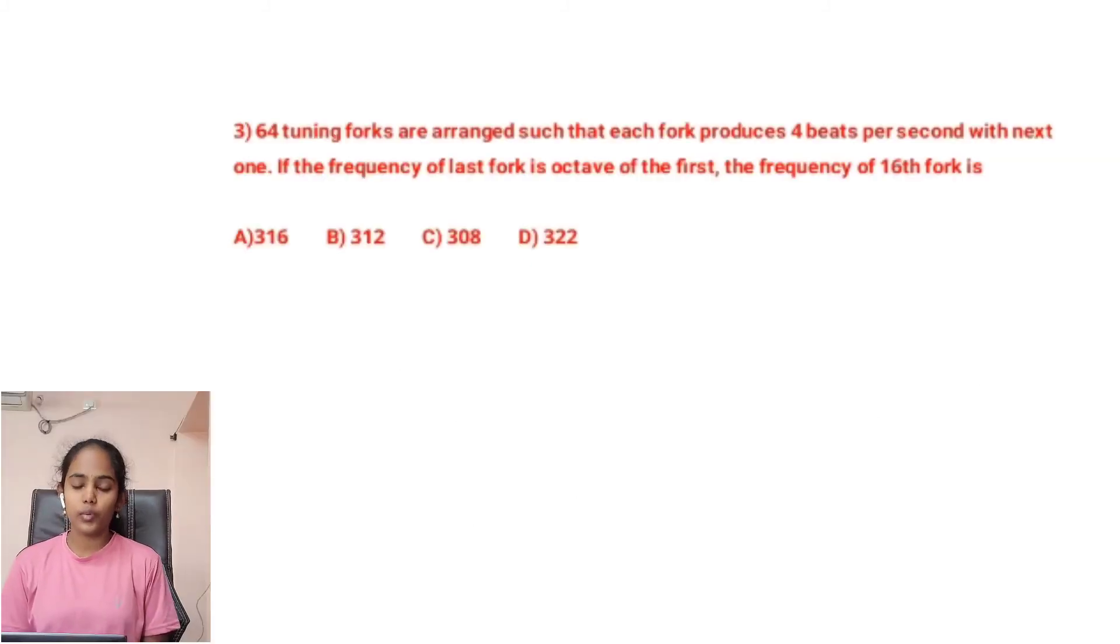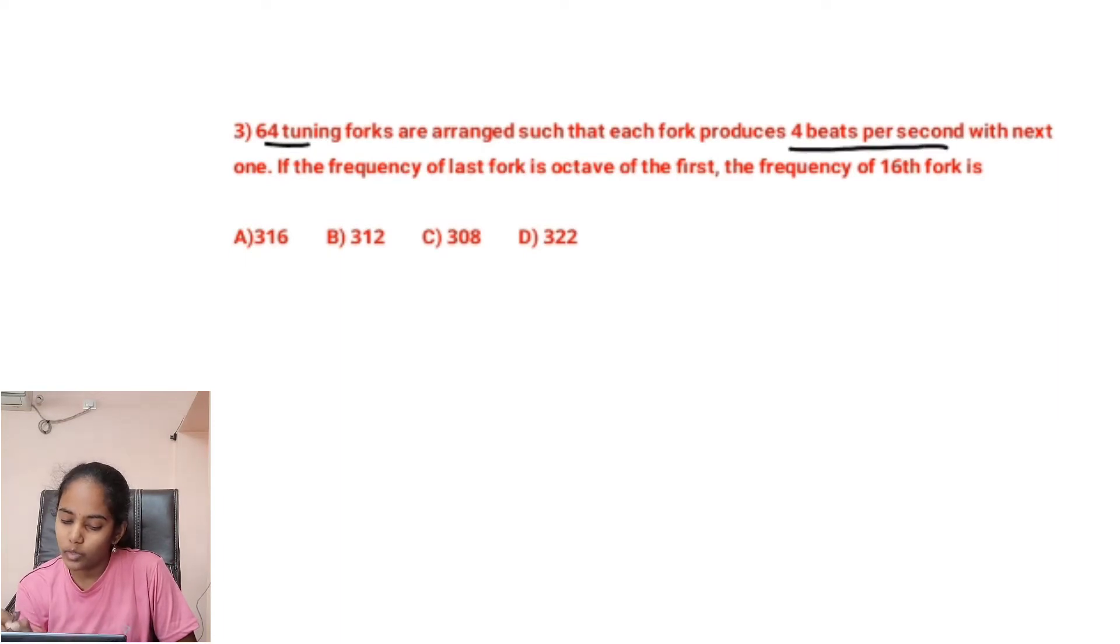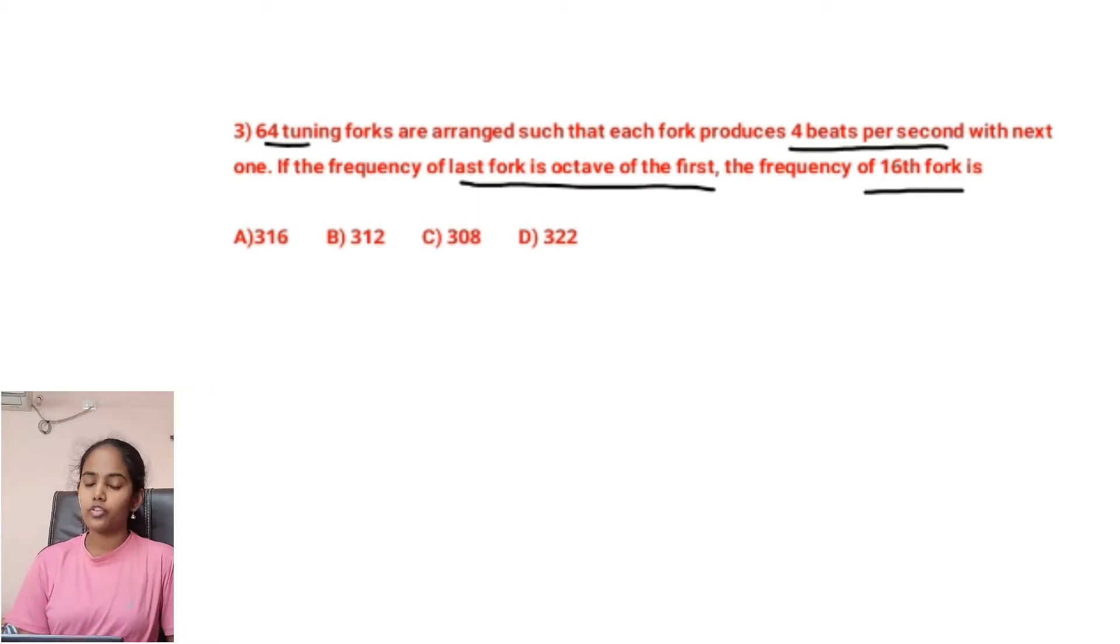Now coming to the third question. 64 tuning forks are arranged such that each fork produces 4 beats per second with the next one. If the frequency of the last fork is octave of the first, then the frequency of the 16th fork is. For this question to be solved, you have to know an equation from arithmetic progression.